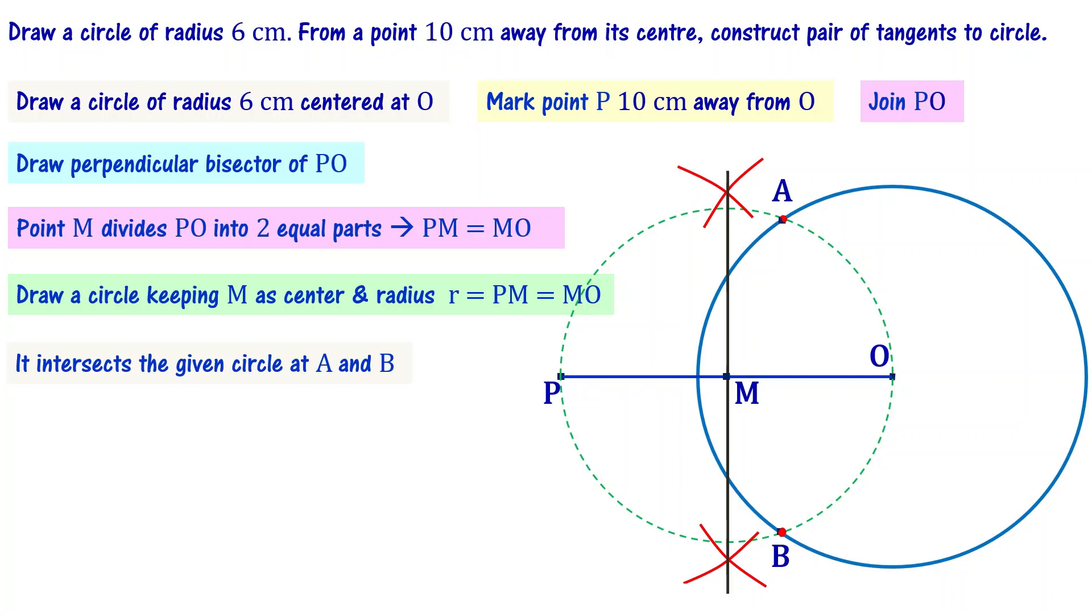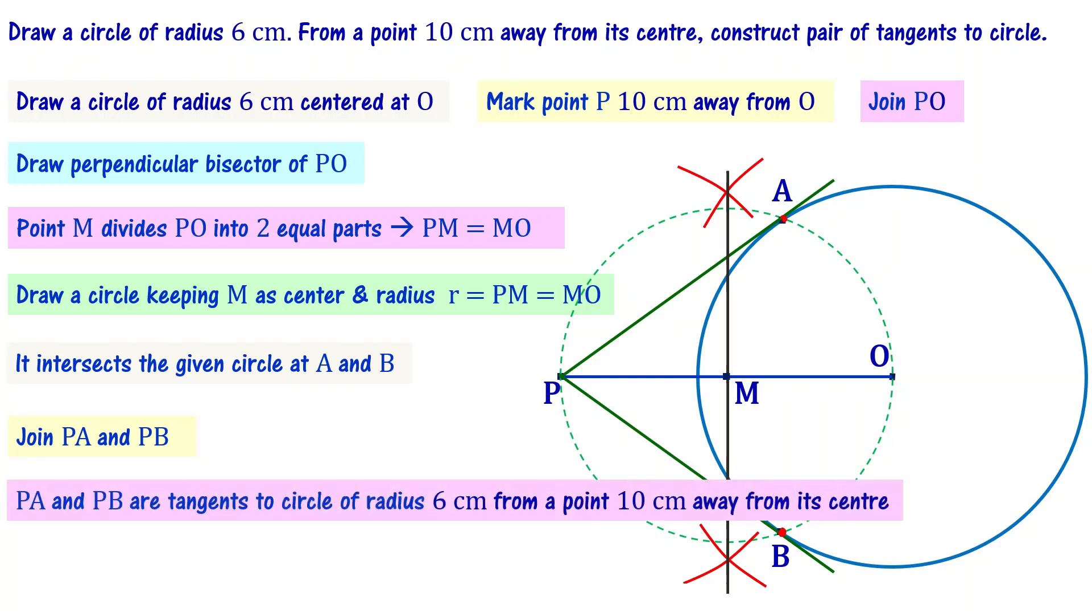The next step is you connect A and P. That is one tangent. And you connect P and B. That is another tangent. Now, we have two tangents to this circle. PA and PB are the tangents to the circle of radius 6 centimeters from a point 10 centimeters away from its center.